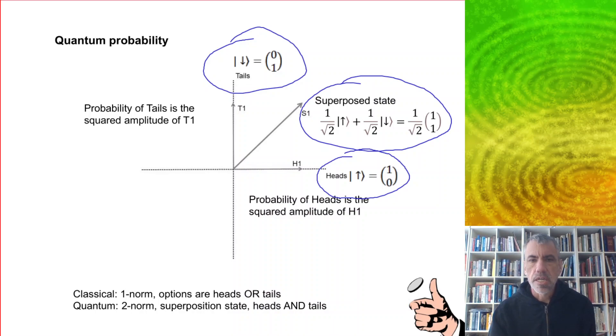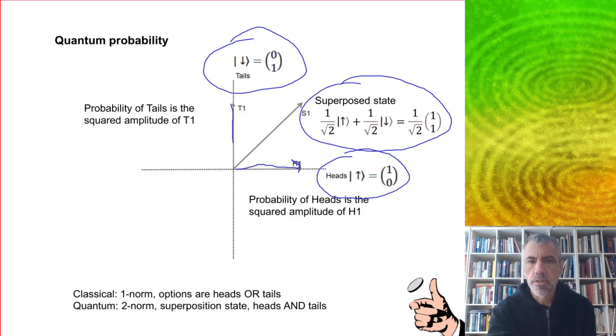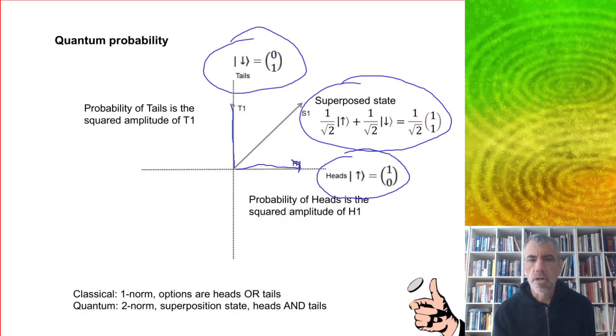And in order to get the probabilities, we'll just take the projections. So the projection on the horizontal axis is going to give, when we square that, the probability of heads, and the probability of tails is going to be the projection onto the vertical axis. And why are we squaring them? Well, because we want the projections to always add to one. And by the Pythagorean theorem, that will be the case.